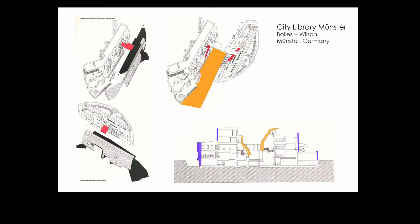At a much larger scale, another example shows a library in Germany that was subsequently built. Two axonometric drawings have been brought together at the top to describe the nature of the walkway between two buildings, which forms part of a route through the city. So two separate axonometric drawings have been laid and combined into this kind of composite affair.